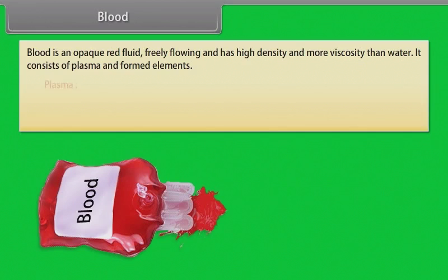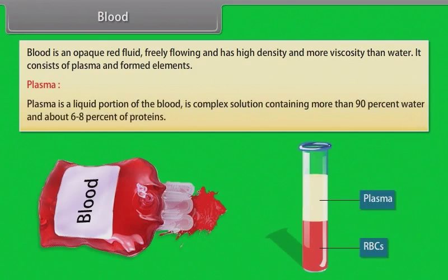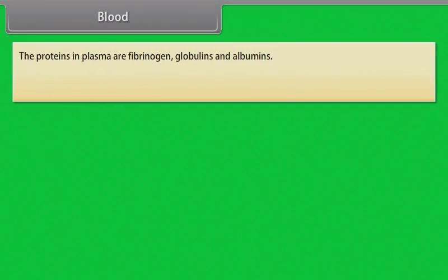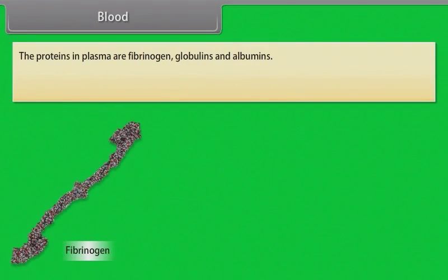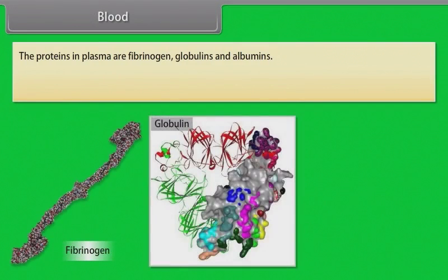Plasma is a liquid portion of the blood. It is a complex solution containing more than 90% water and about 6–8% of proteins. The proteins in plasma are fibrinogen, globulins, and albumins.